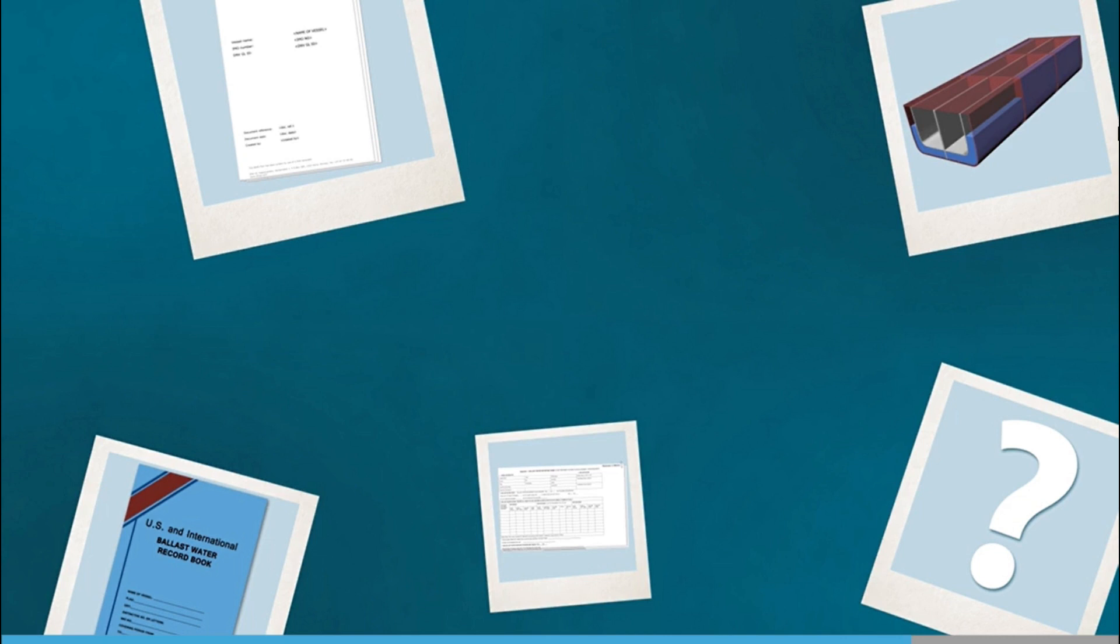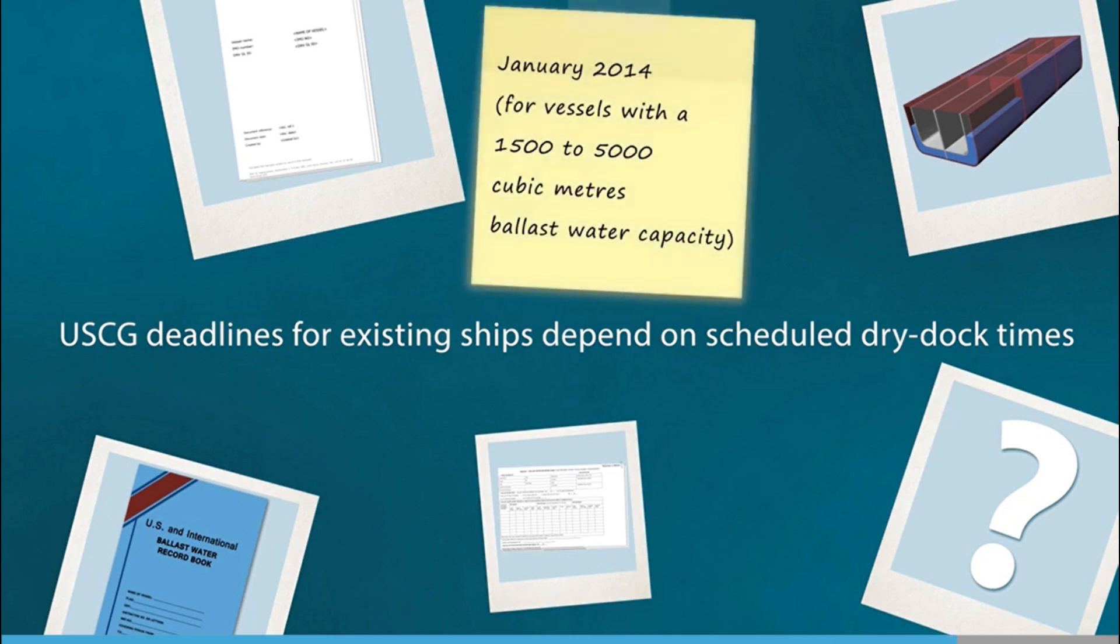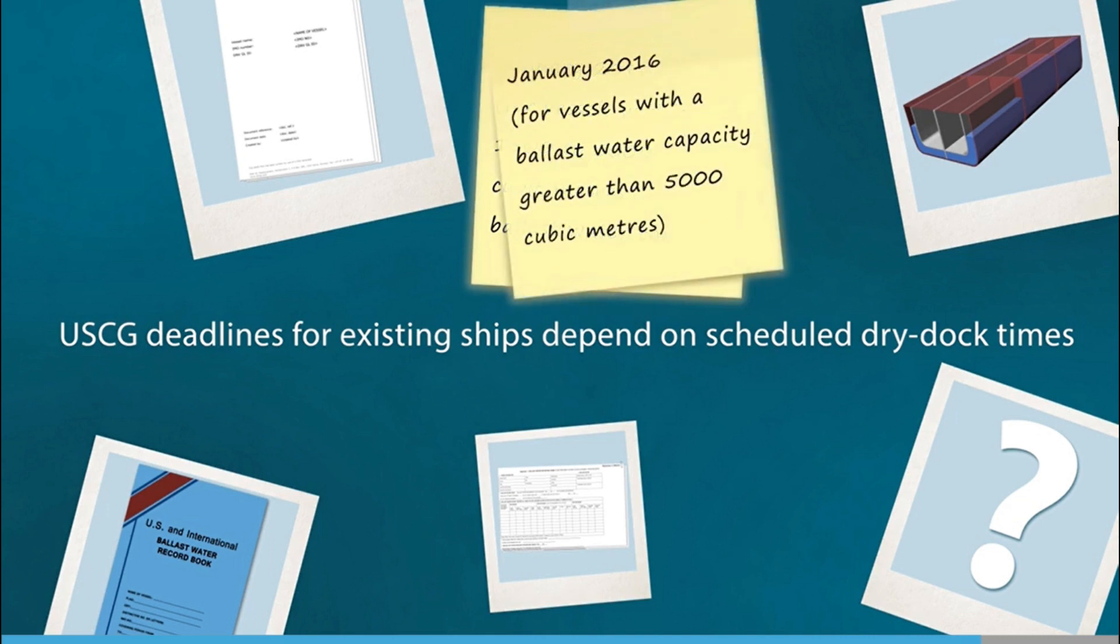The current U.S. Coast Guard's requirements are that existing vessels must be fitted with an approved ballast water treatment system at their first scheduled dry docking after either January 2014 for vessels with a 1,500 to 5,000 cubic meters ballast water capacity, or January 2016 for vessels with a ballast water capacity greater than 5,000 cubic meters.